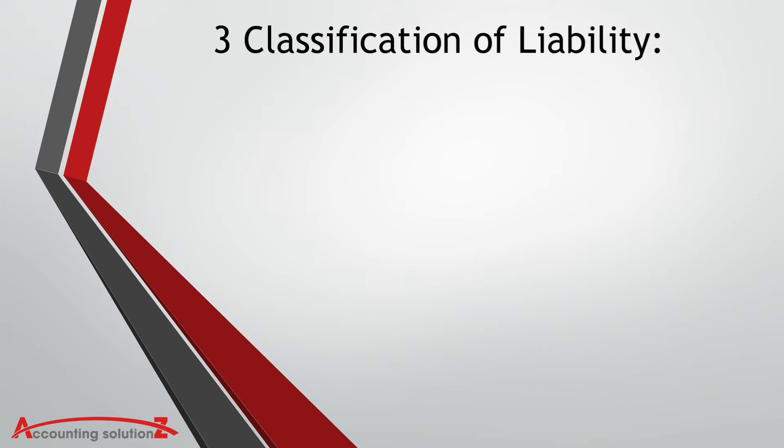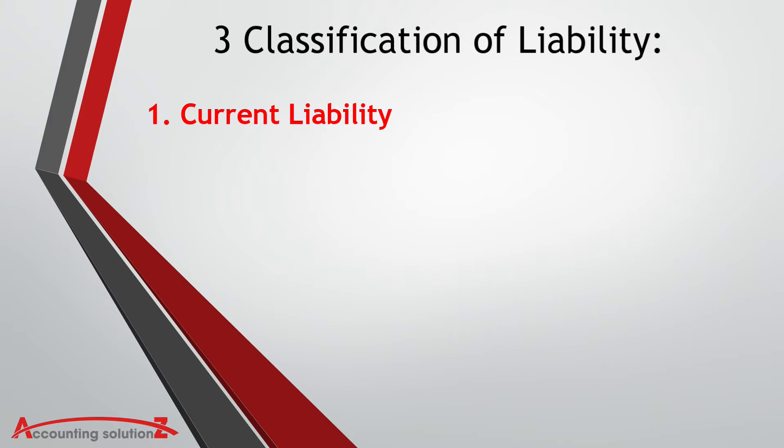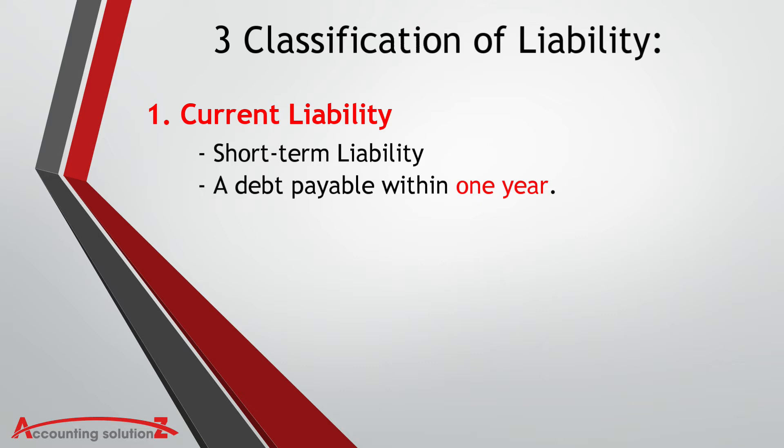First is the Current Liability, also called Short-Term Liability. It is a debt payable within one year, and these primarily occur as part of regular business operations. Examples are Accounts Payable, Wages Payable, Tax Payable, Insurance Payable, and Short-Term Bank Loan.